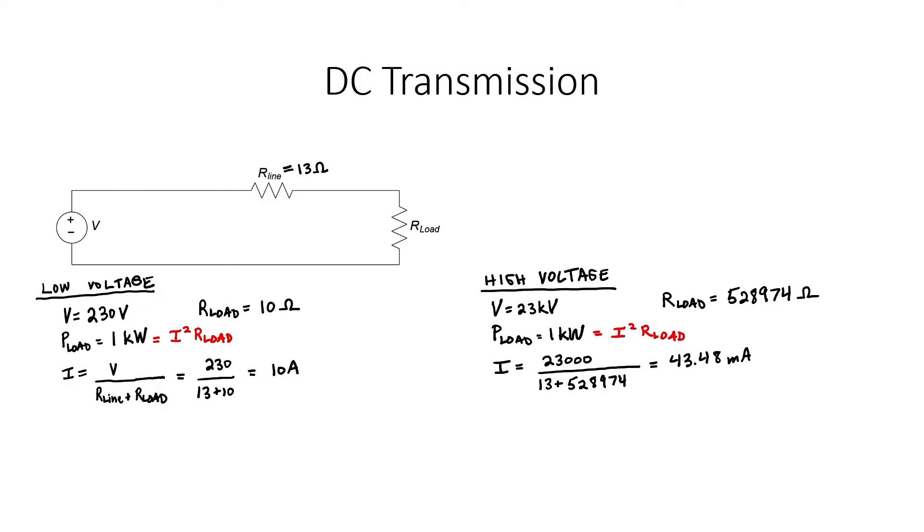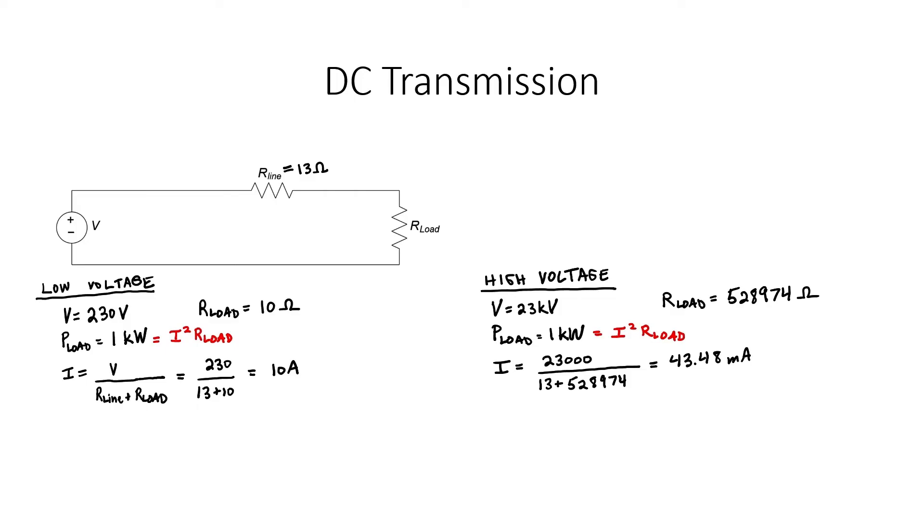Now given that we've delivered 1 kilowatt to the load in both situations, I now want to ask the following question. In which case is more power burned up along the line? The low voltage case or the high voltage case? Well we can very easily calculate the power burned up on the line. We can use the same formula, P equals I squared R.